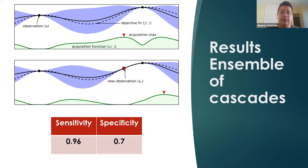Here, this study was done on the INbreast dataset of 410 mammograms, with a sensitivity of 0.96 and a specificity of 0.7.